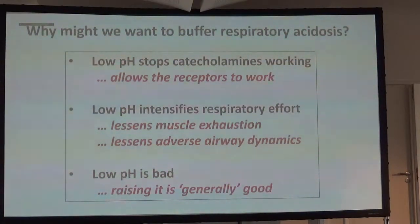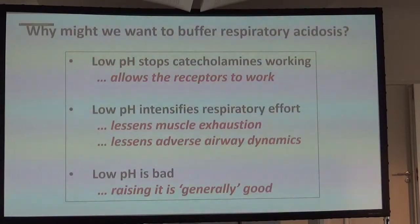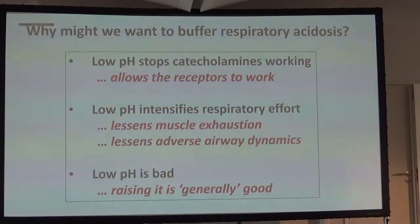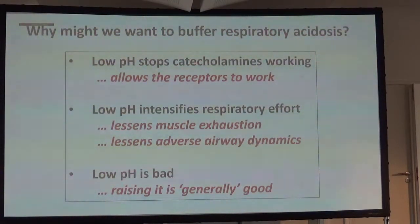Depending on the nature of the patient's airway problem, they may have dynamic airway problems. In children you can see this very easily — children often have malacic large airways, and when you sedate them their breathing becomes a lot easier. Many patients with asthma also have dynamic airway occlusion. And we know over generations that patients with very low pHs do badly, so clinicians were tempted to raise pH as a desperate measure to try to fix the patients.